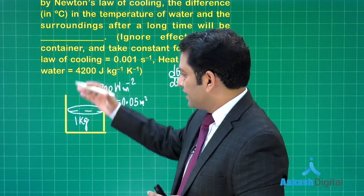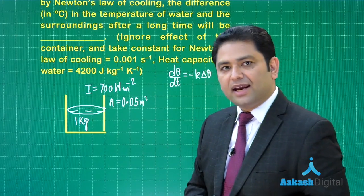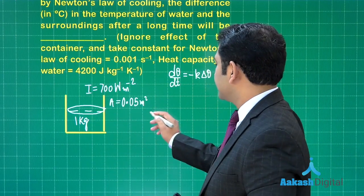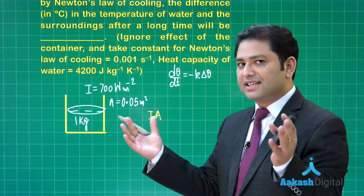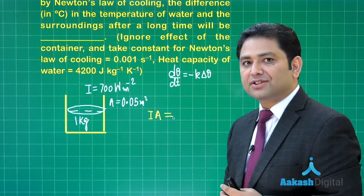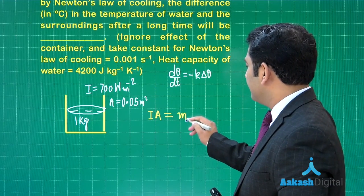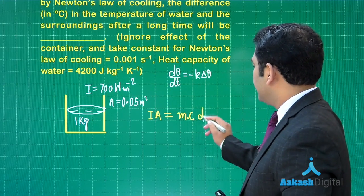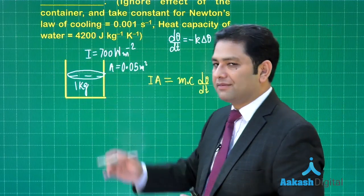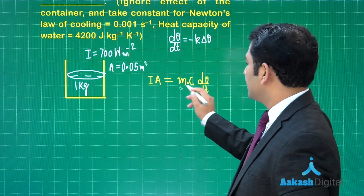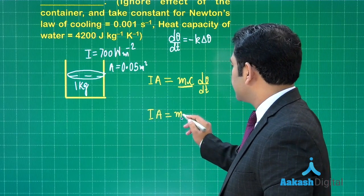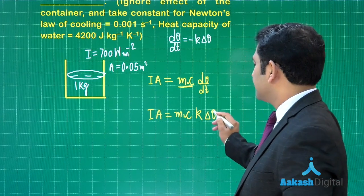At steady state, the rate at which it receives energy will be equals to the rate at which the energy would be lost. The rate at which energy is received is i multiplied by a, essentially that is power. And that should be equals to rate at which energy is lost to the surrounding, and that will be m multiplied by c multiplied by d theta by dt, where m is the mass, c is the specific heat capacity. But here heat capacity has been given and that is true because it is 1 kg.